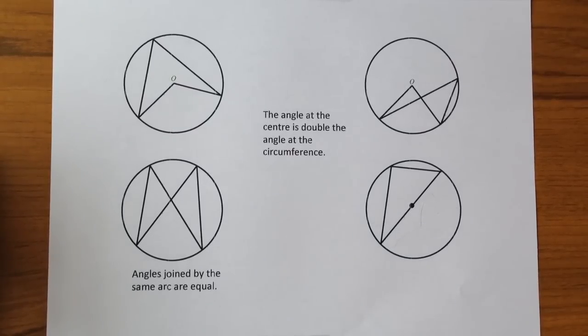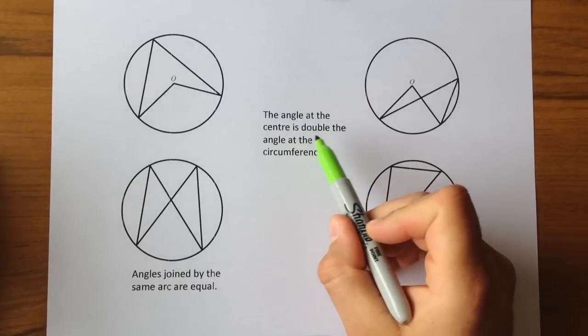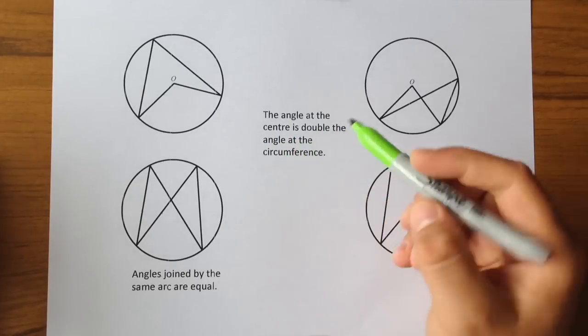This video is going to attempt to explain the main circle theorems you need to know about to pass your GCSE maths at a higher tier. The first one is angle at the centre is double the angle at the circumference.